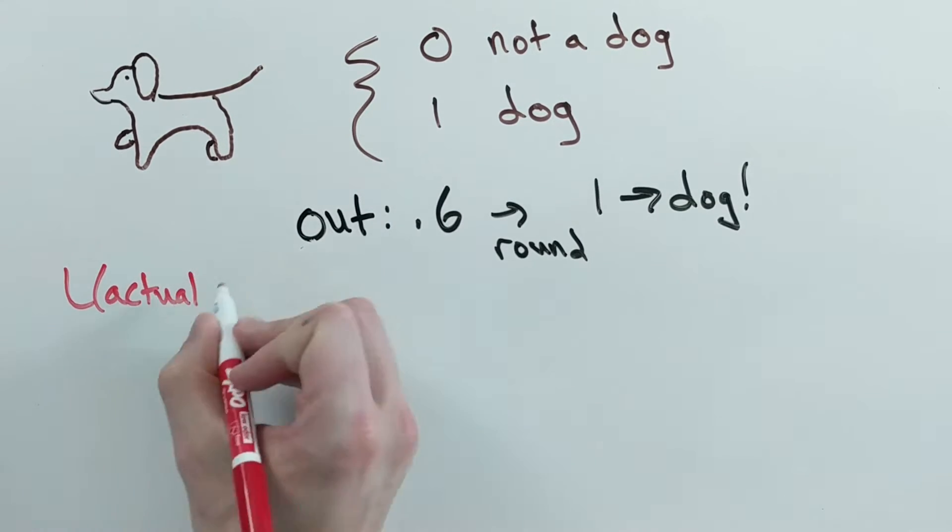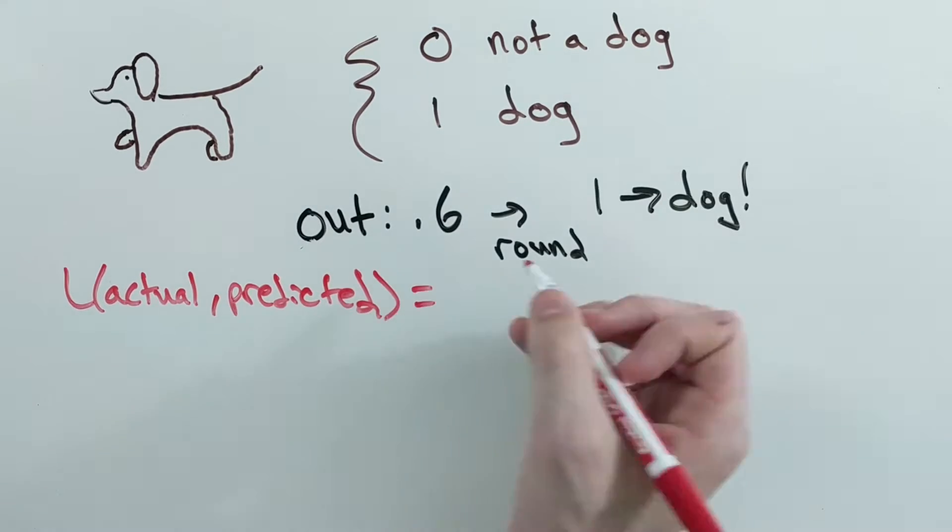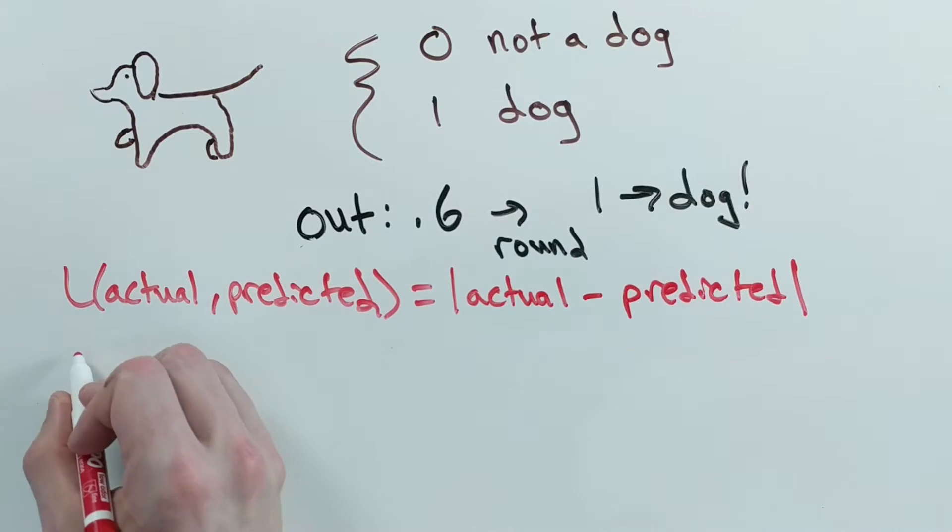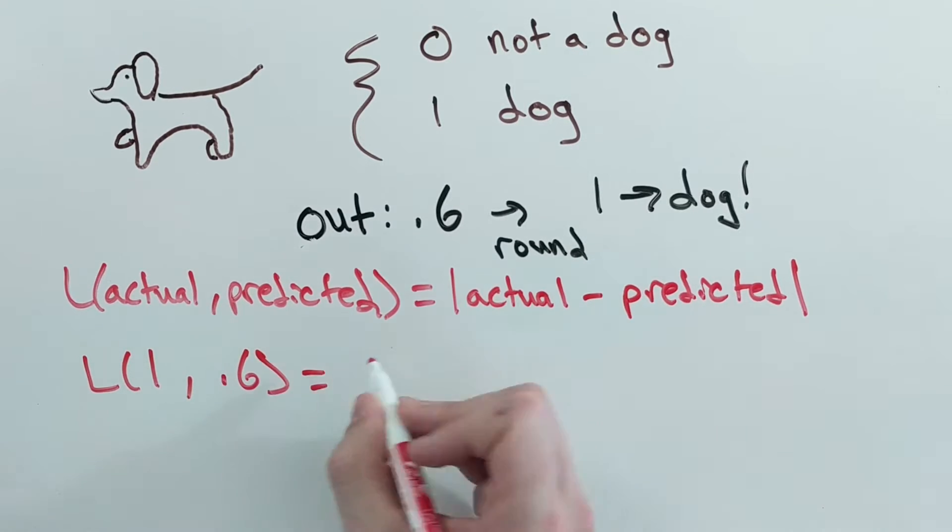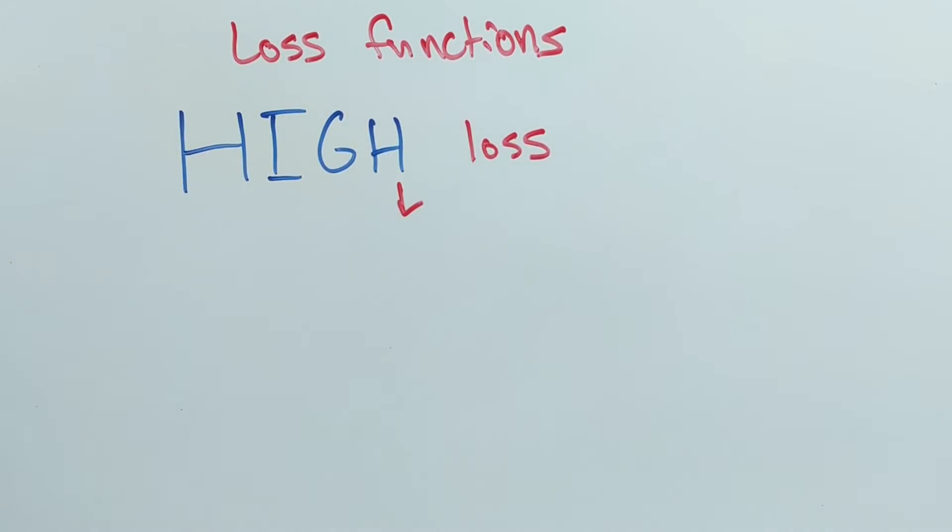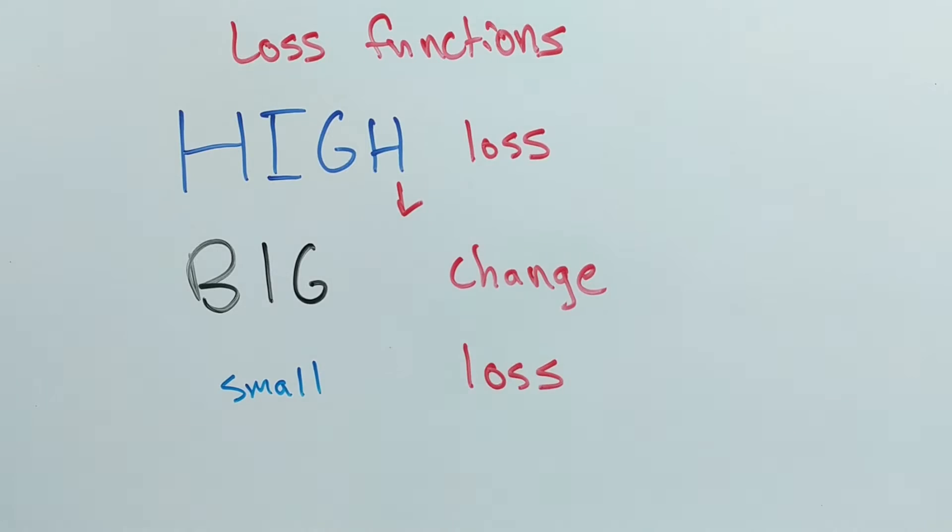A loss function that might make sense is to take the absolute value of the difference. That is, the loss is equal to exactly how far off our prediction is. In the dog example, this loss would be 0.4. You then modify your model based on the size of your loss. If you have a high loss, it will change more than when you have a low loss.